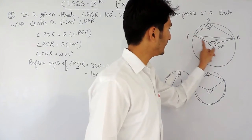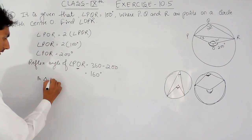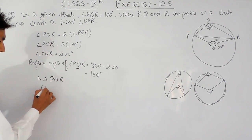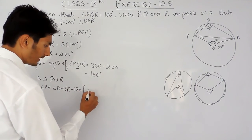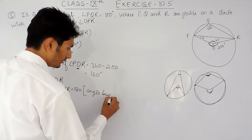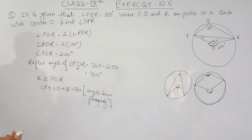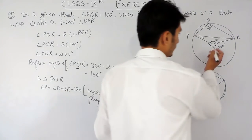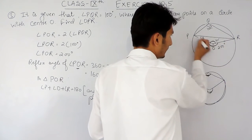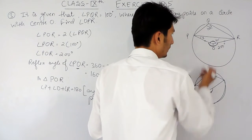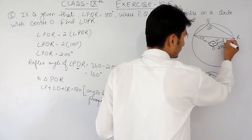In triangle POR, the sum of all angles — angle P plus angle O plus angle R — must be equal to 180 degrees. This is the angle sum property in a triangle. Also, OP and OR are radii of the circle, so the length of these two radii must be equal, making triangle POR an isosceles triangle.